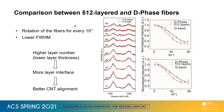We further compared the 512-layer fiber with the disperse-phase fiber, and we see an increase in the overall alignment of the fiber. So with a higher layer number resulting in more interfaces, we obtained better CNT alignment.